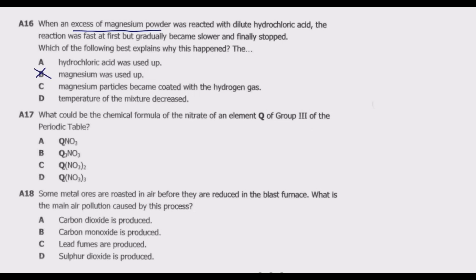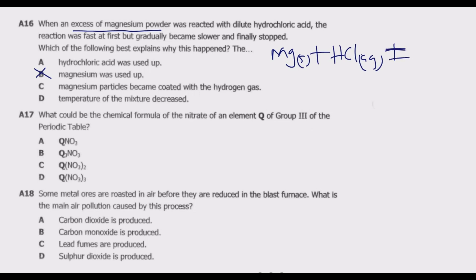Let us look at the equation. The standard equation is reacting an acid with a metal. When we react an acid with a metal we end up with a salt and hydrogen gas. So we have magnesium solid reacted with hydrochloric acid (aqueous), giving us magnesium chloride plus hydrogen gas.